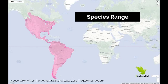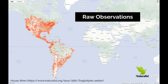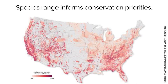Intuitively, the range of a species is the set of locations where it can be found. Ranges are generally estimated from a collection of locations where the species is known to be present and absent. We care about species ranges because they are important for biodiversity monitoring and conservation.